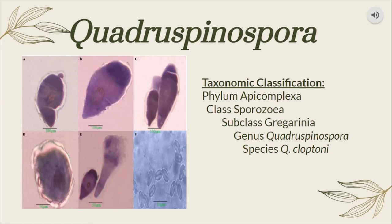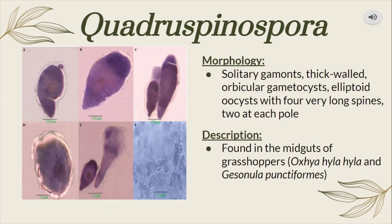Quadrosperispora is classified under the class Poroseia. This genus is known to be thick-walled, have solitary gamonts, orbicular gametocysts, and elliptoid oocysts provided with four long spines at each pole. Some species of Quadrosperispora are known to infect the midguts of some grasshoppers.